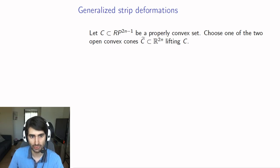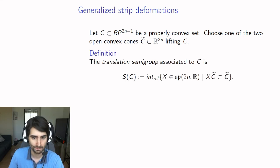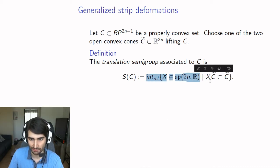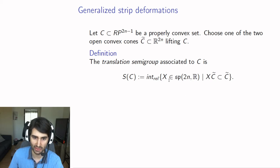You choose one of these properly convex sets. When you have a convex set in projective space, you can lift it to a cone in R2n. Actually, this cone will have two components, so you just choose one and call that C tilde. Then the translation semi-group associated to the convex set in projective space is the relative interior of all elements of the Lie algebra which map the lifted cone inside itself.